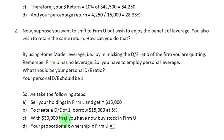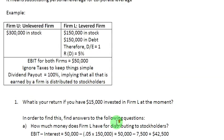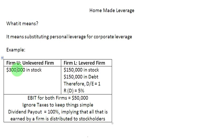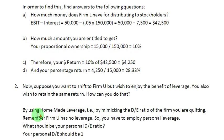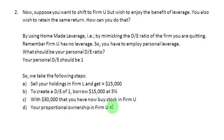With these $30,000, you go ahead and buy stock in Firm U. If you invest $30,000 in Firm U, what is your proportional ownership? The value of stock in Firm U is $300,000 and your investment is $30,000, so your proportional ownership is again 10% — $30,000 divided by $300,000 gives you the same proportional ownership in Firm U.